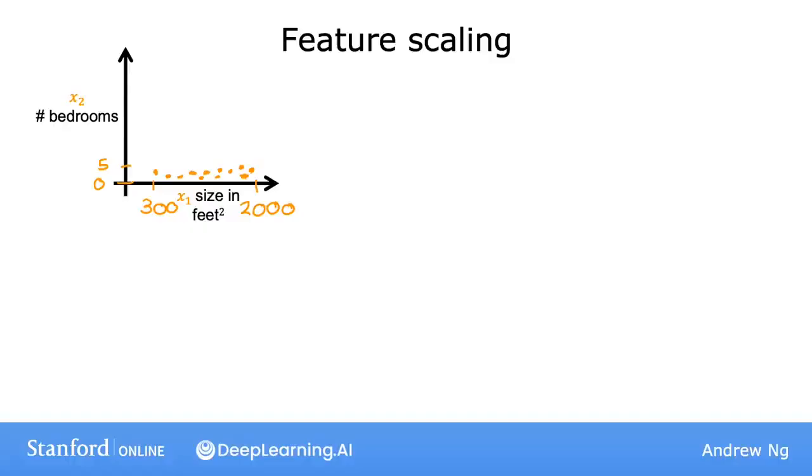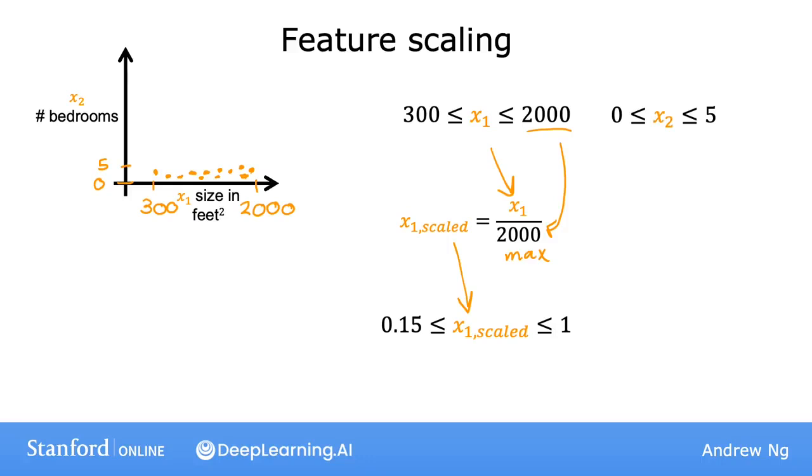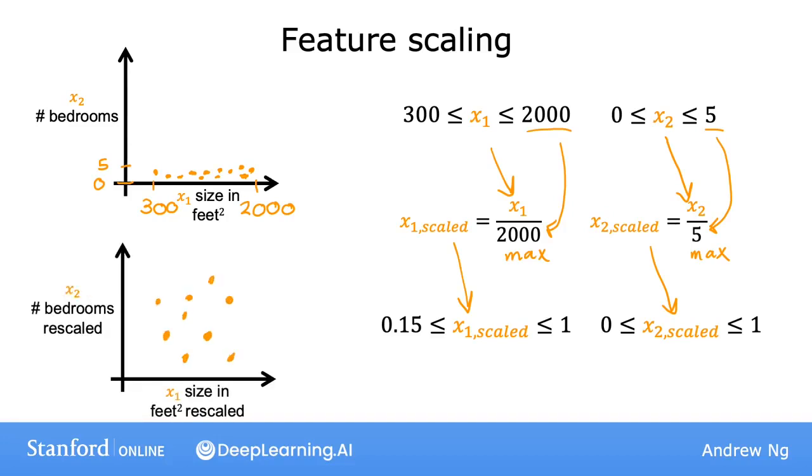So how do you actually scale features? Well, if x1 ranges from 300 to 2000, one way to get a scaled version of x1 is to take each original x1 value and divide by 2000, the maximum of the range. So the scaled x1 will range from 0.15 up to 1. Similarly, since x2 ranges from 0 to 5, you can calculate a scaled version of x2 by taking each original x2 and dividing by 5, which is again the maximum. So the scaled x2 will now range from 0 to 1. So if you plot the scaled x1 and x2 on a graph, it might look like this.